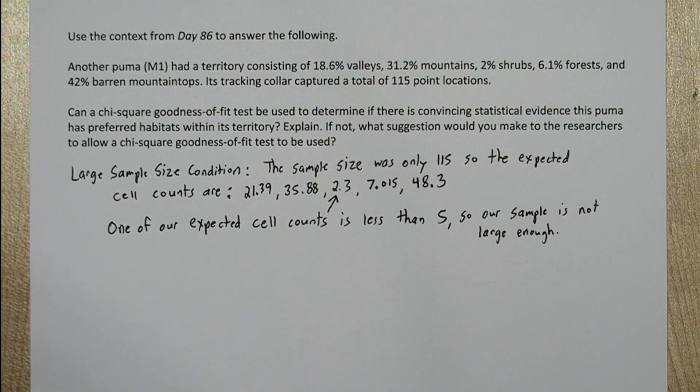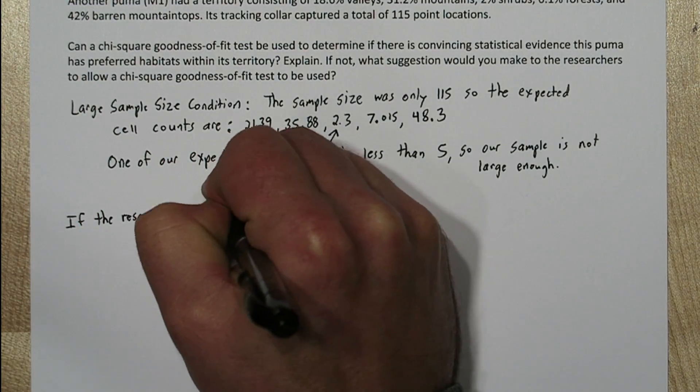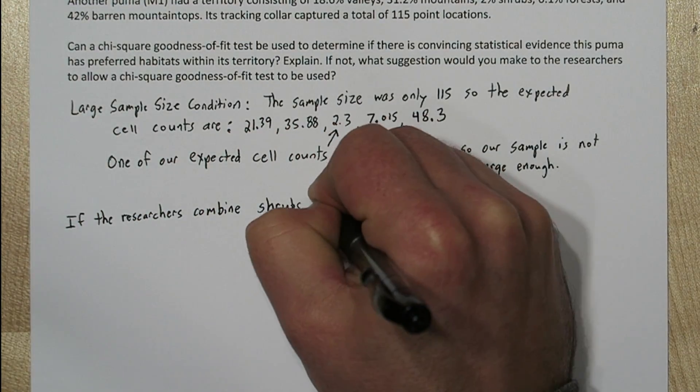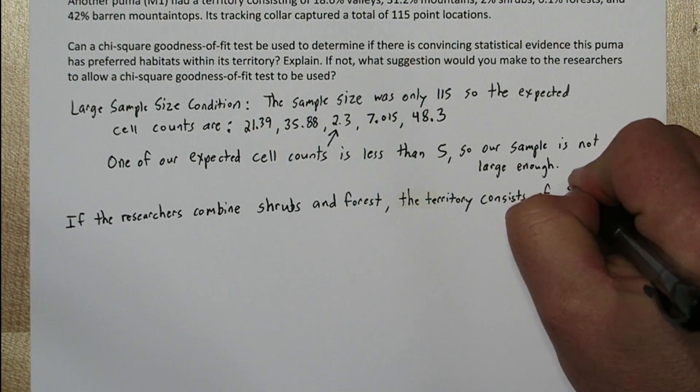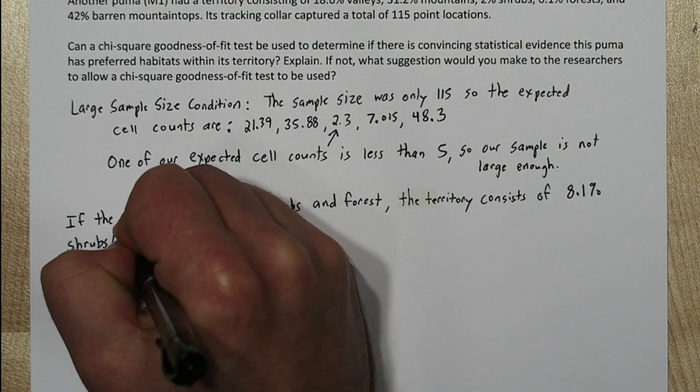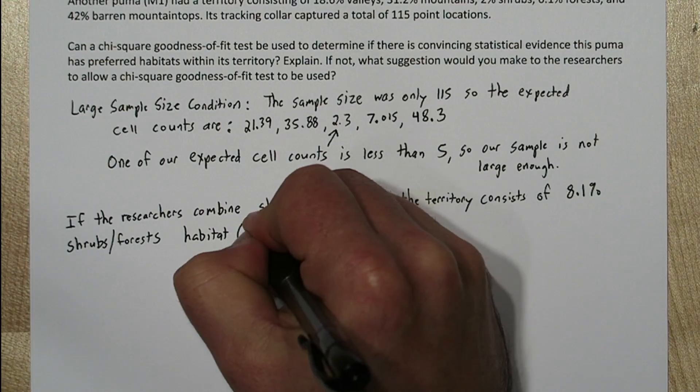So now we need a suggestion for the researchers. If the researchers combine shrubs and forests, the territory consists of 8.1% shrub forest habitat, which is the 2% of shrubs plus the 6.1% of forest.